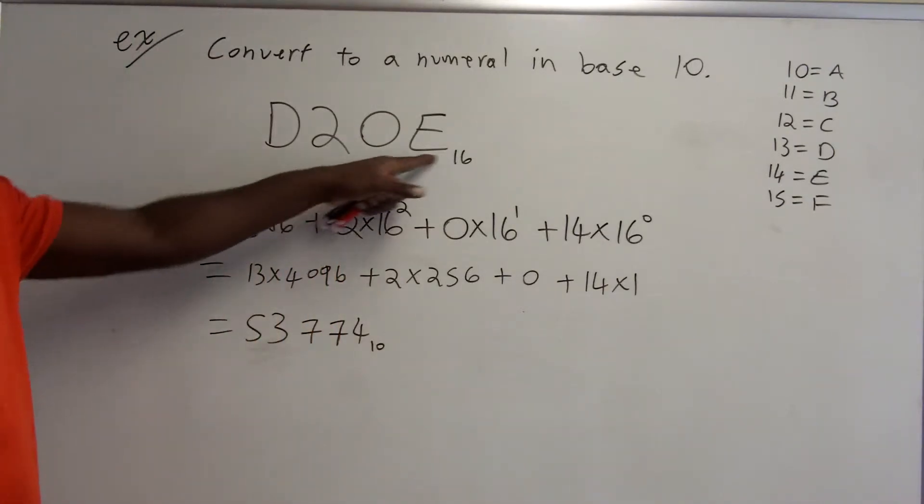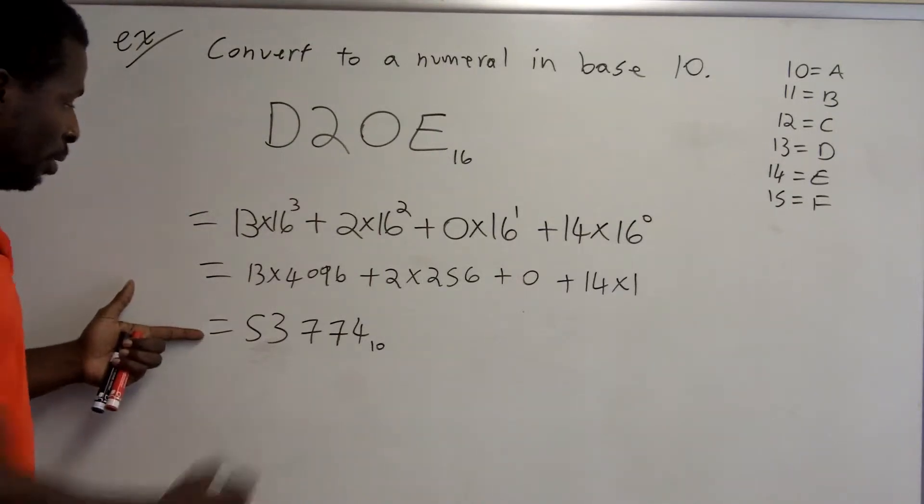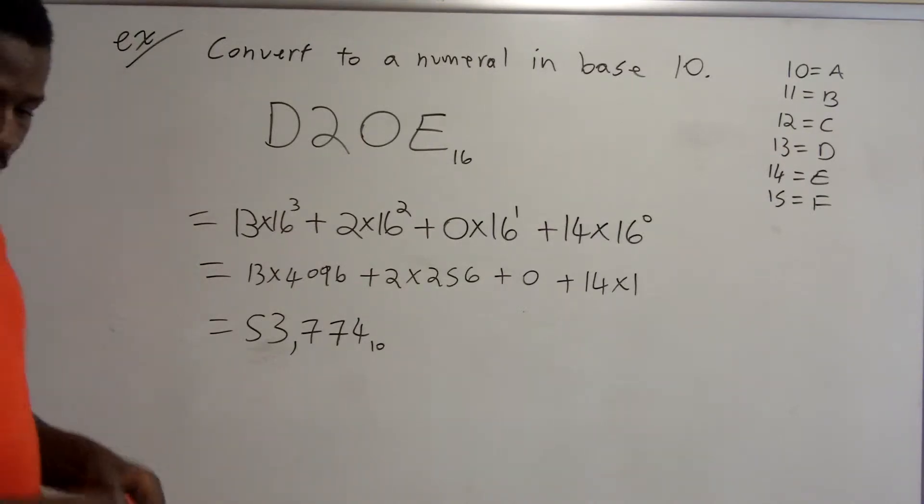And I get here that this is actually the numeral 53,774 if you write it as a base 10 numeral. So base 16, it looks like this. Makes no sense to you or me, probably. But base 10 is this number, 53,774. So let's go back in the other direction.